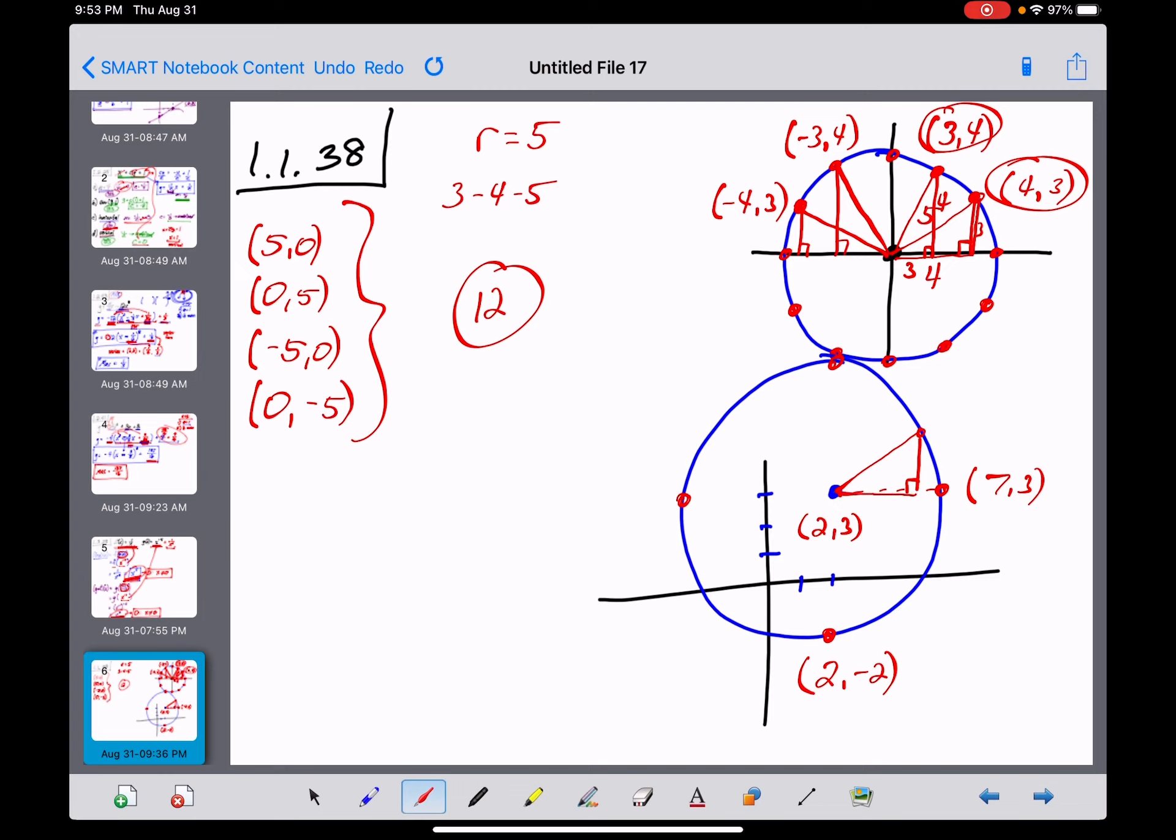And here, there's a 3, 4, 5 triangle. So 4, 3, and 5. But again, this time, we're starting from (2,3).